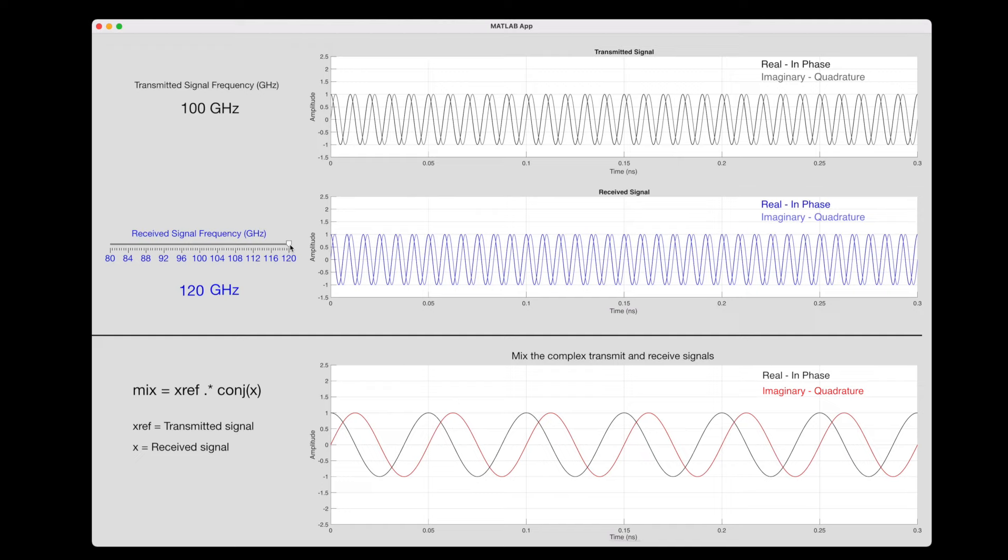Therefore, by checking which of the signals is leading in-phase, we can determine direction. So as a quick recap, we transmit IQ signals. They get Doppler shifted, and then the received signals are mixed with the transmit signals to produce a beat frequency. The beat frequency is proportional to radial velocity of the object, and its direction is given by which signal is leading in phase.